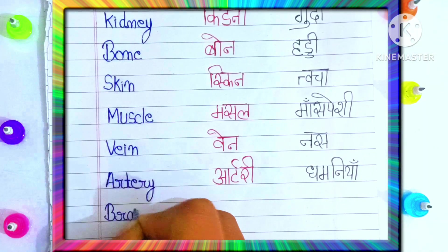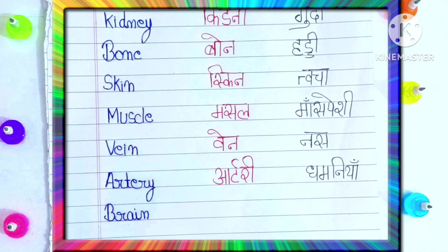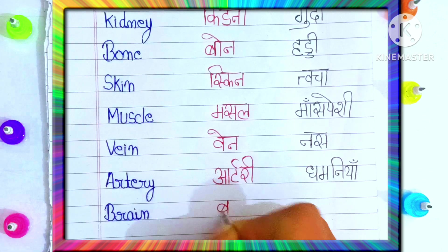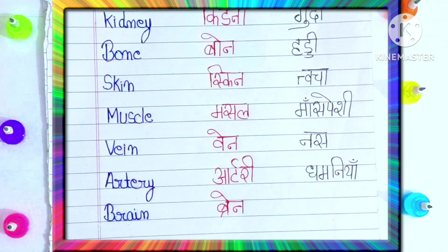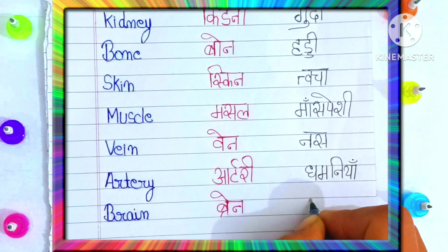B-R-A-I-N. Brain. Brain means? Mustishk.